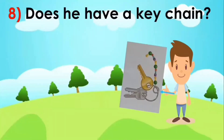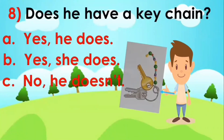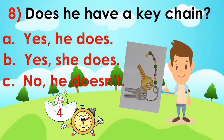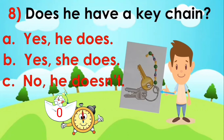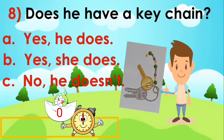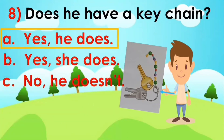Next, does he have a keychain? A: yes, she does. B: yes, she does. C: no, she doesn't. Your time starts now. Time is off. The answer is letter A.